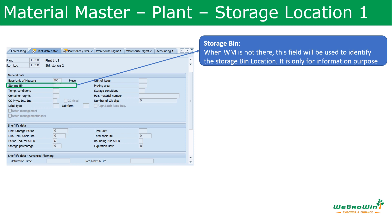The general data is the first tab in the plant store location view 1. It starts with Storage Bin. Storage bin is a field that can be entered by the warehouse staff to identify the location within the store location where the material is always stored. For example, if the warehouse management module is not available, this field can be used to identify the location. The storage bin field does not have any functionality within inventory management, meaning we cannot get reports without customization, and we cannot perform actions like moving material from here. Please note that only one storage bin can be defined for each material in the store location — that is a limitation.